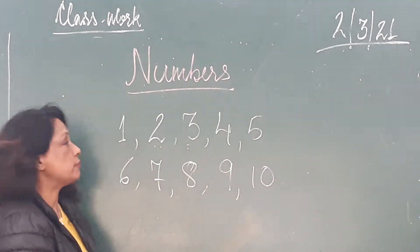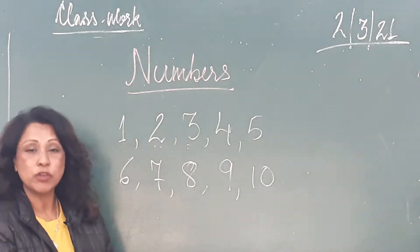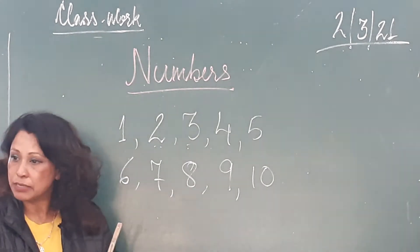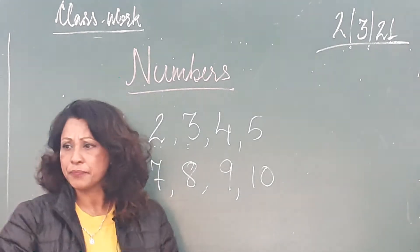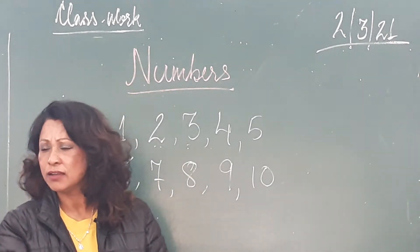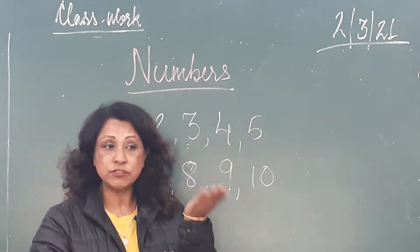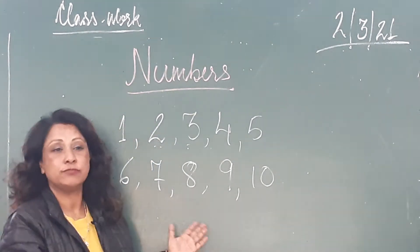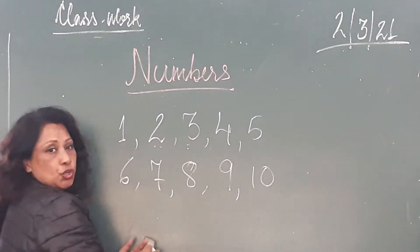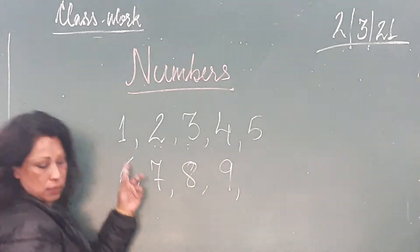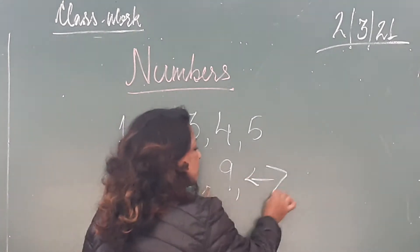Today's topic will be on numbers. All these are called numbers. Last year in UKG you must have learned numbers, and all these numbers have a name. From class one we are going to learn the different names for different numbers. Just as you all have different names, these numbers also have different names. The numbers from one to nine — one, two, three, four, five, six, seven, eight, nine — they are all called single digit numbers.